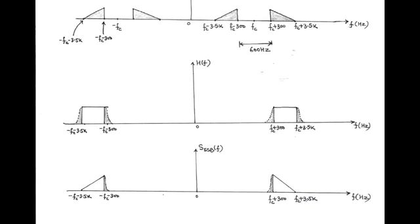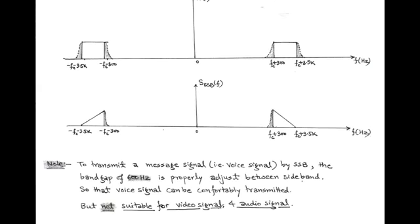For the transmission of video signals and audio signals, we use another method called vestigial sideband or VSB, which will be discussed in the next topic.